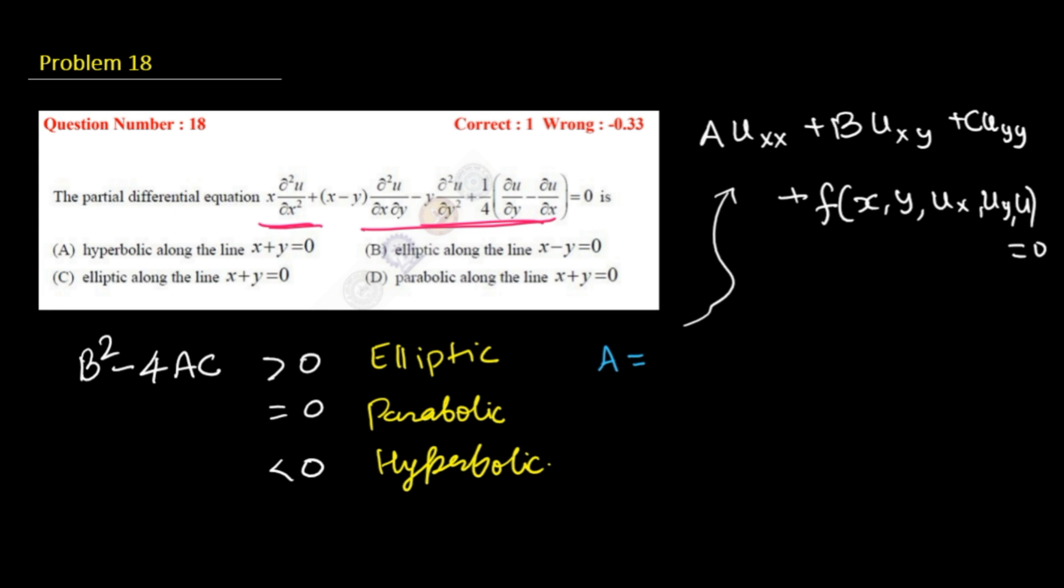Let us calculate here in this problem: B² minus 4AC. A is x, B is (x-y), and C is -y. So B² minus 4AC will be (x-y)² plus 4xy, which is nothing but (x+y)².